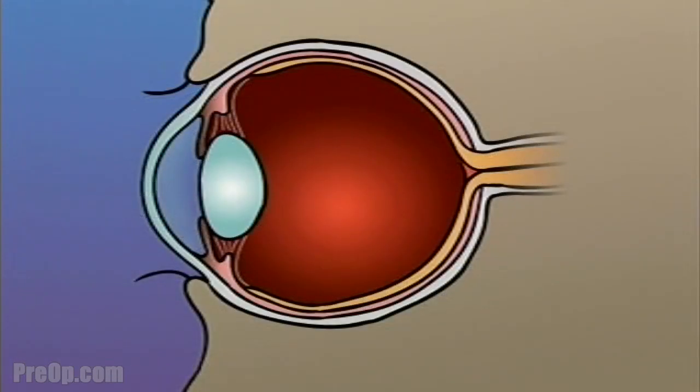The human eye is constructed like a camera, with a clear lens in the front and light-sensitive tissue at the rear. This tissue makes up the retina, which acts like photographic film.